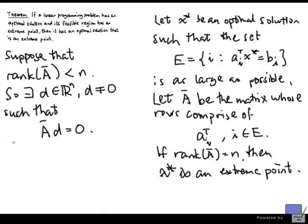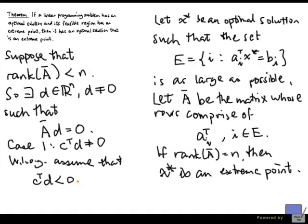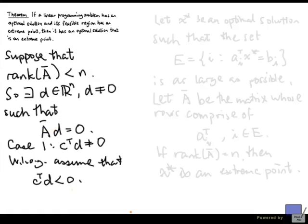Now we look at two cases. The first case is when C transpose d is non-zero. The second case, which we'll consider later, is C transpose d equals 0. So let's consider the case when C transpose d is not equal to 0. Well, without loss of generality, assume that this is in fact negative. Because if it's not negative, we can take minus d in place of d. And minus d will still satisfy the condition, it's still non-zero, and A-bar minus d is also 0.